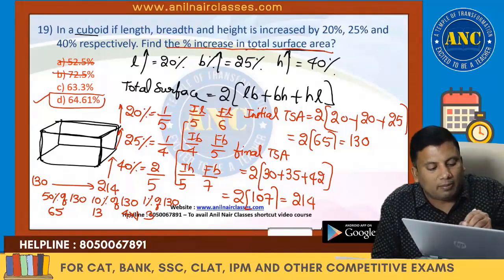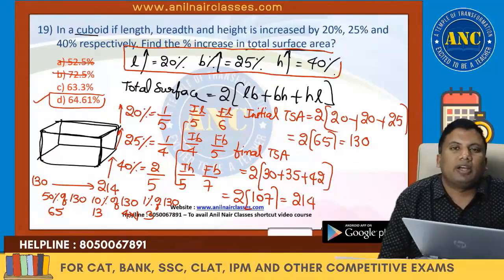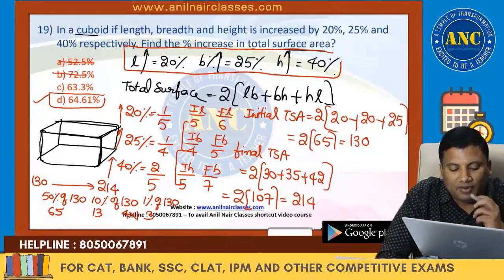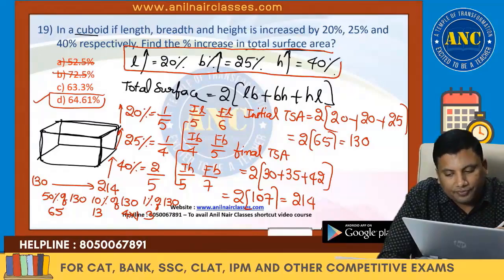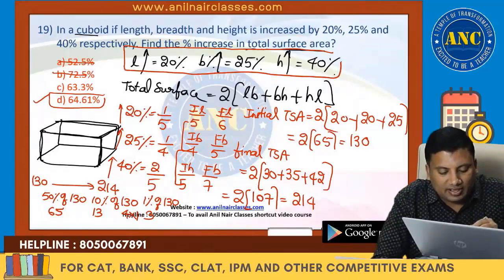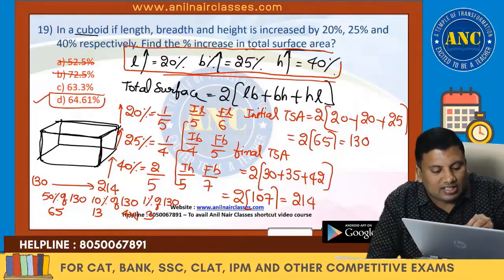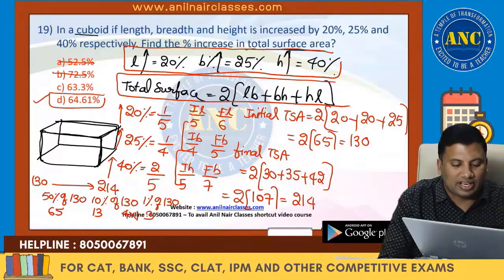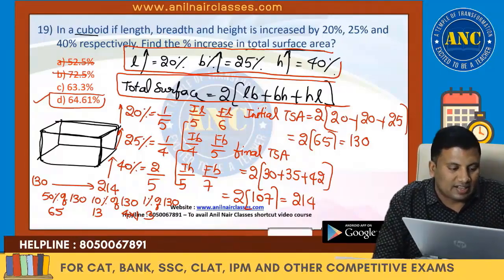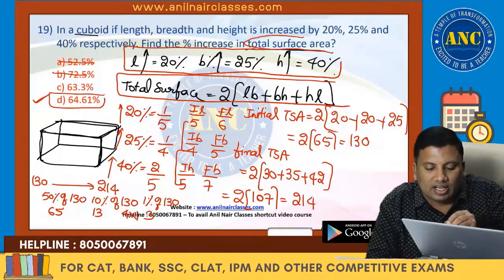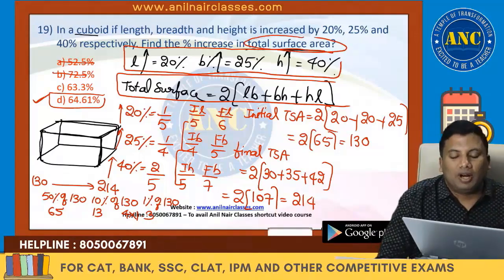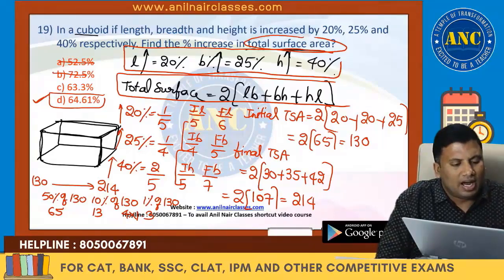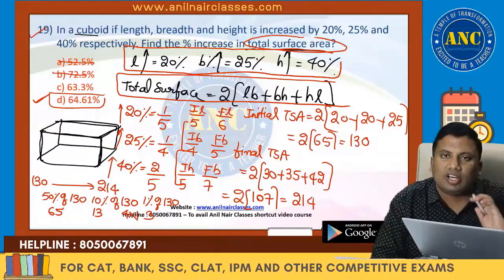Length increased by 20%, breadth by 25%, height by 40%. So: 5 → 6, 4 → 5, 5 → 7. Use the formula: total surface area = 2(LB + BH + HL). You will get the answer. Very easy question — you just need to know the formula and remember that the denominator is the initial value and the numerator is the change.